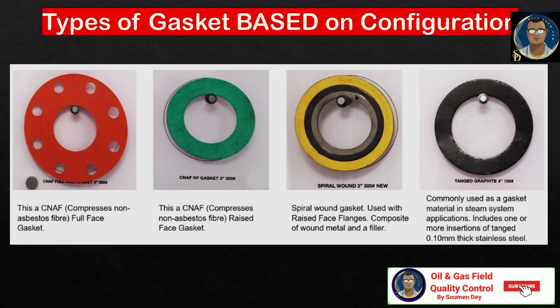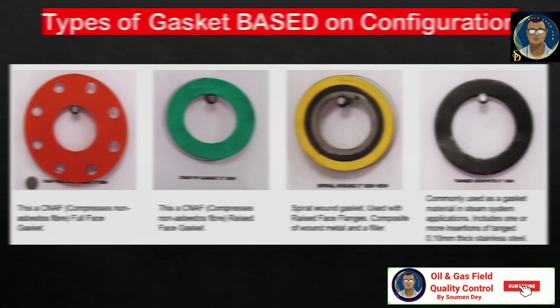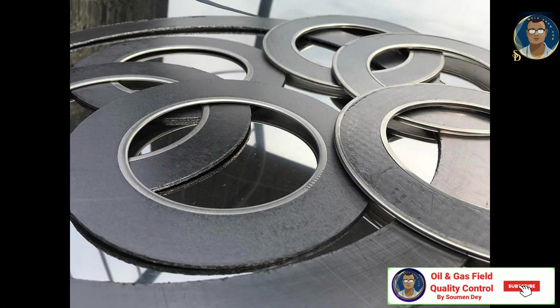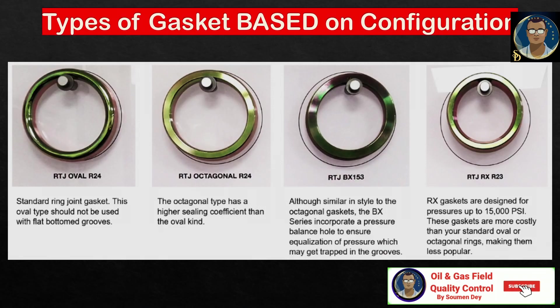Let us elaborate on each type. Non-metallic gaskets can be made from CNAF (compressed non-asbestos fiber), PTFE, rubber, Teflon, or graphite. Non-metallic gaskets compress easily with low tension bolting and are generally used for low pressure and low temperature applications. One exception is the graphite gasket, which can be used for temperatures as high as 460 degrees Celsius. Rubber and elastomer gaskets are not used for pipelines transporting hydrocarbons.